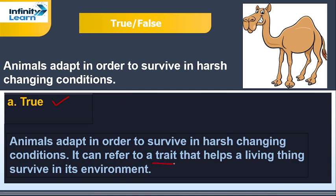It can refer to a trait that helps a living thing survive in its environment. For example, in case of camels, they have a water sack in the lumen of their stomach which helps in storing water so they can live without water for many days. This is a special feature of camels.